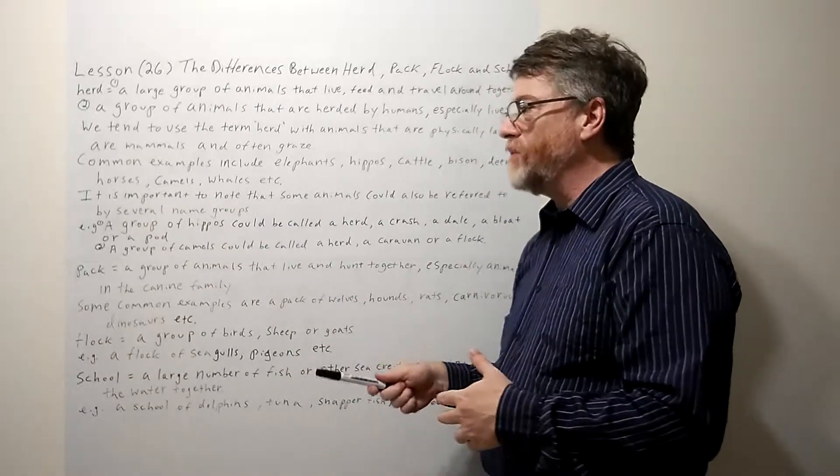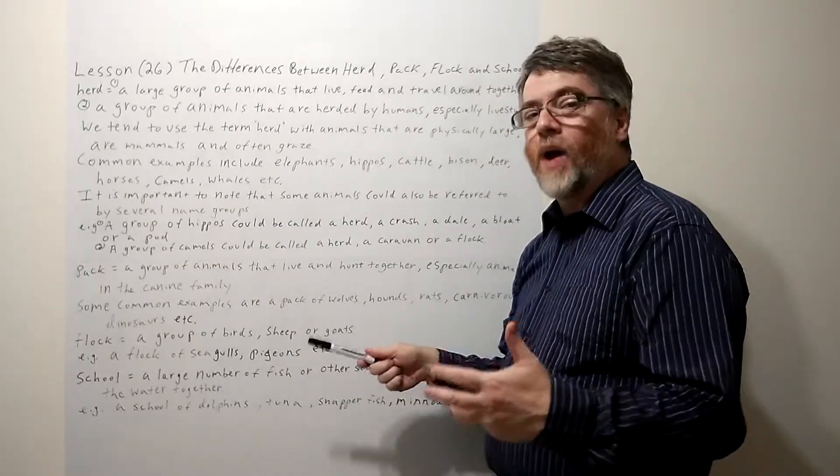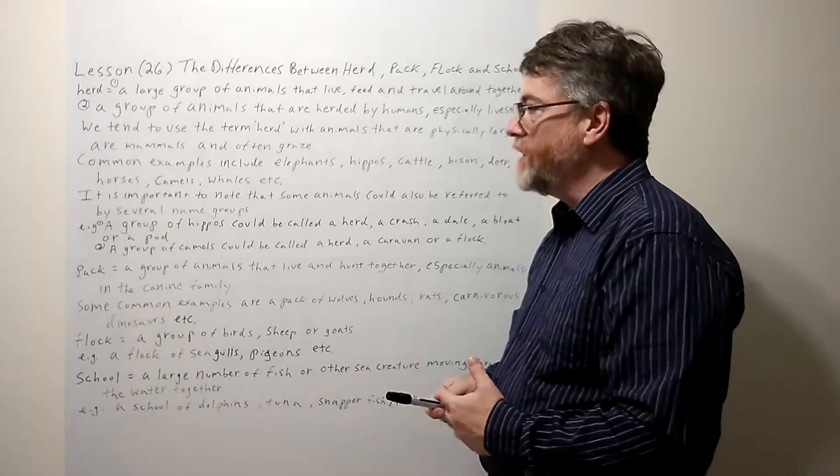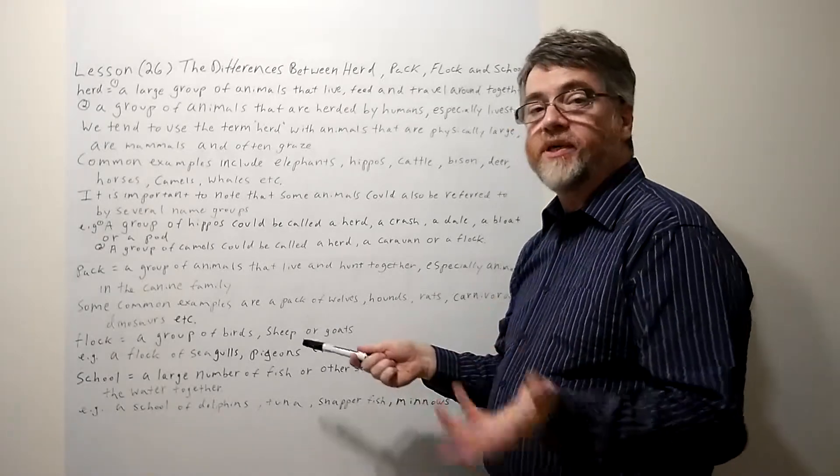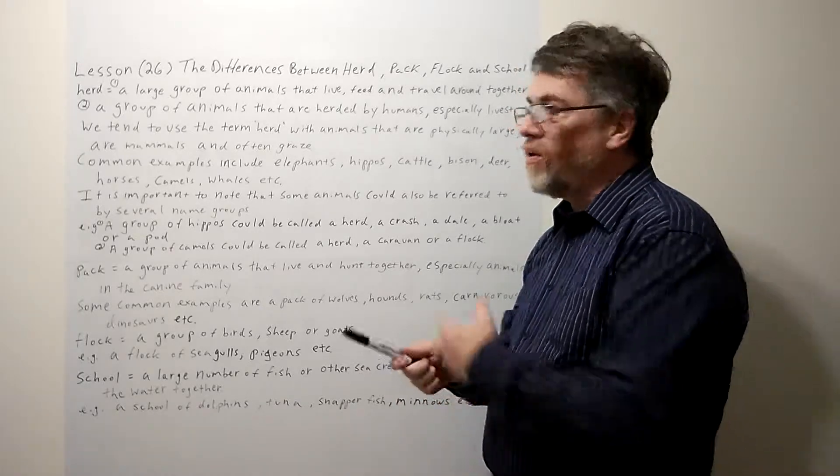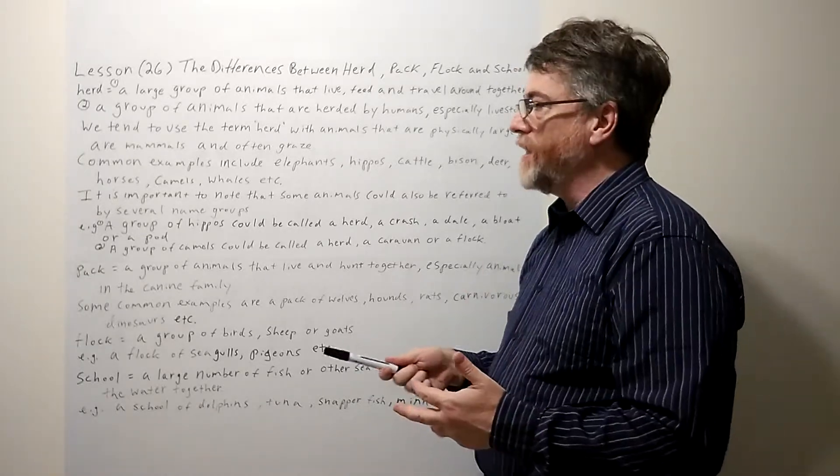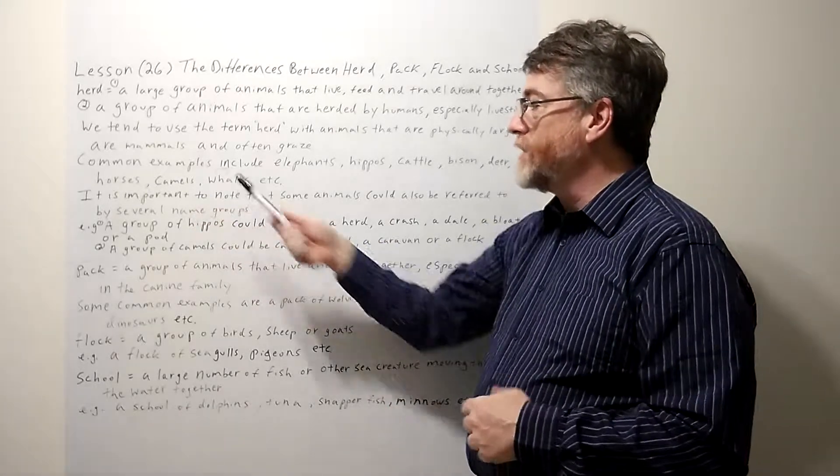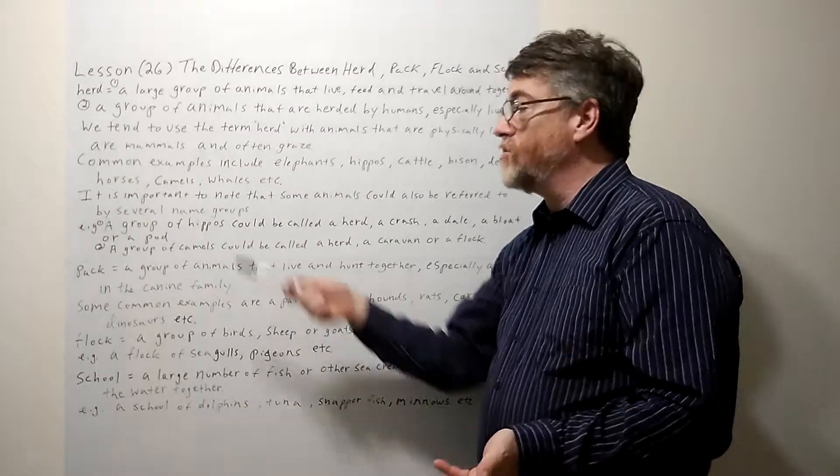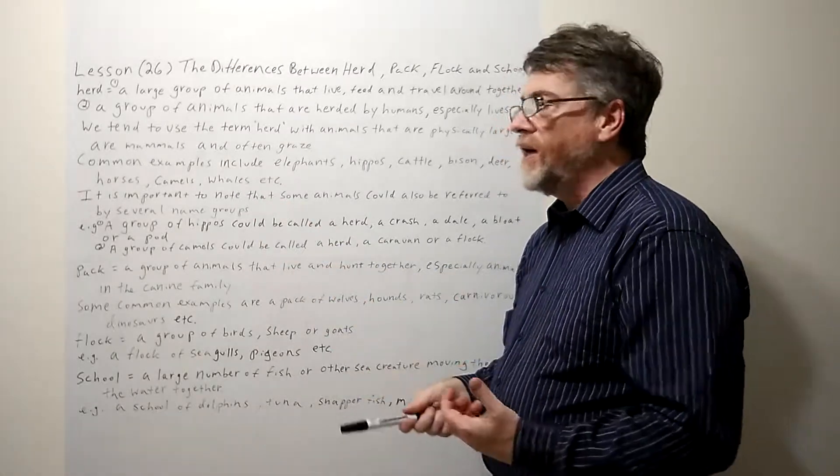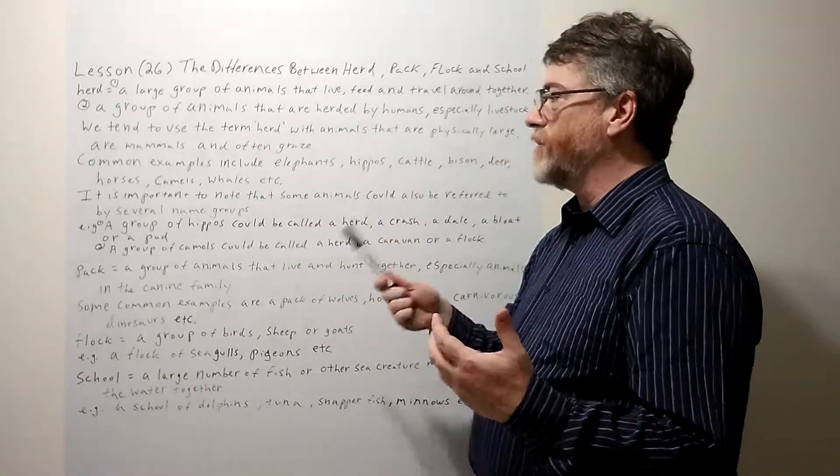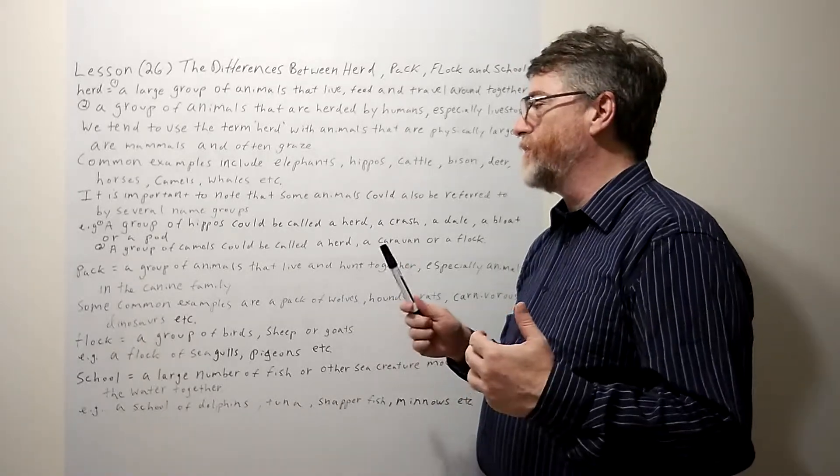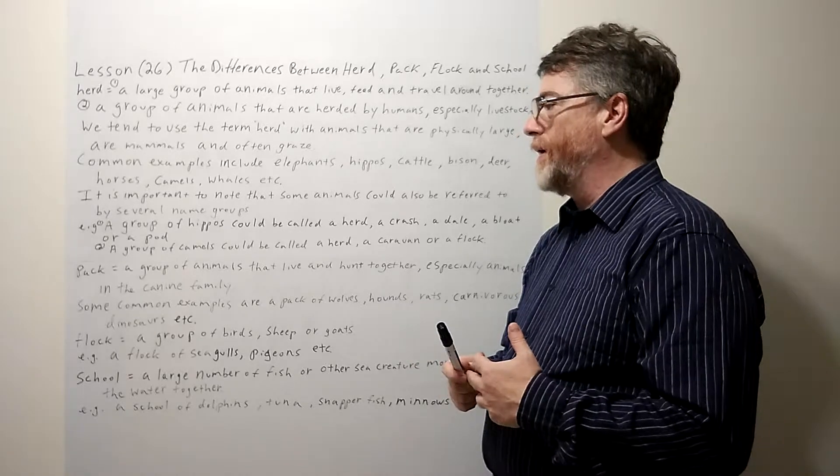Horses, especially animals in the equine family—that could include zebras and all different styles of horses. Camels, whales—definitely large, also mammals. Most of these fall into that sort of category. Herd is probably one of the most common ones we use for groups of animals.